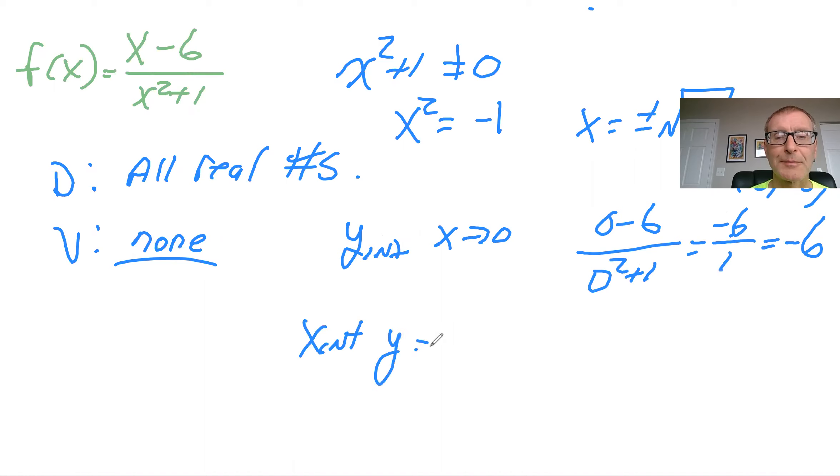And so what's the X-intercept? That's when Y equals 0. And again, when you set this equal to 0, that's when the numerator equals 0, right? So the X minus 6 equals 0. So X would be 6. So the X-intercept is 6, 0.